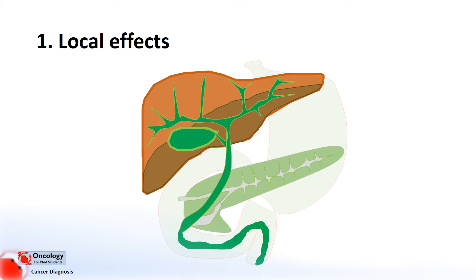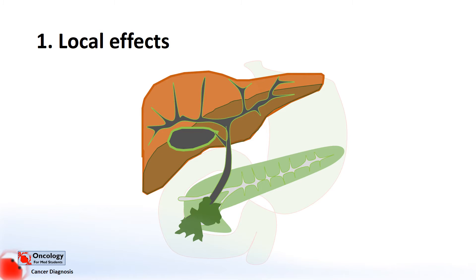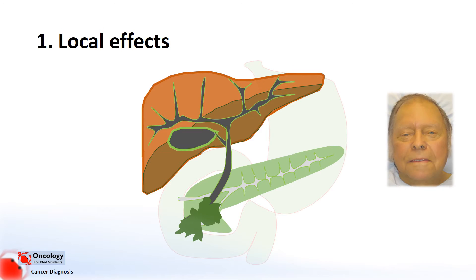However, if a tumour grows in the head of the pancreas — the part of the pancreas where the bile ducts run through — the drainage system gets blocked. The bile doesn't make its way into the intestine and eventually the bile leaks back. This means that the bilirubin, which would normally be excreted in the bile, builds up in the blood. When you have high levels of bilirubin in the blood it then deposits in the skin and the eyes and causes jaundice.